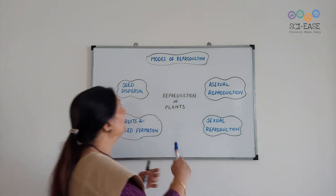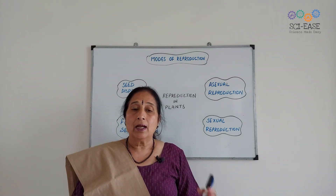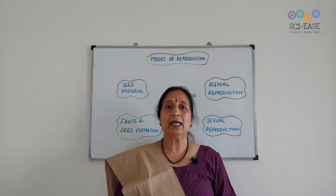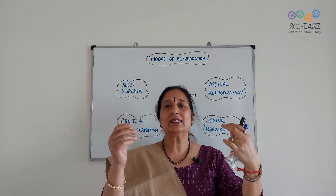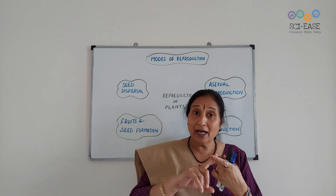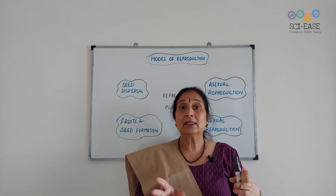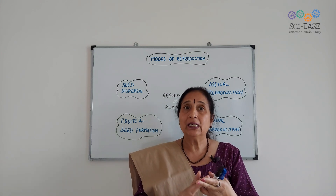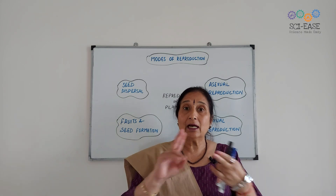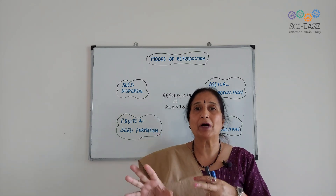So my first topic will be the modes of reproduction — what are the different modes of reproduction? We will study plants only. The different parts of the plant are roots, stems, branches, leaves — they are the vegetative parts of the plant. And the flowers and the fruits — they are the reproductive parts of the plant.